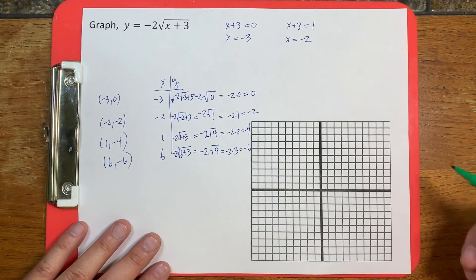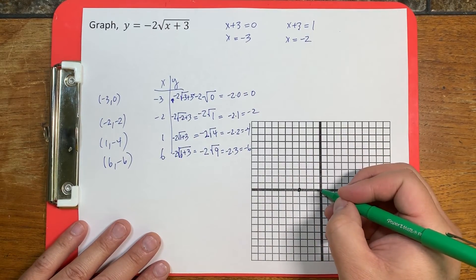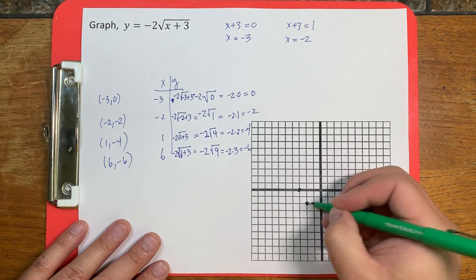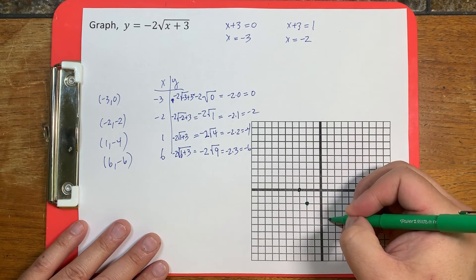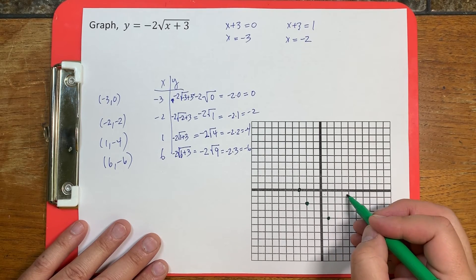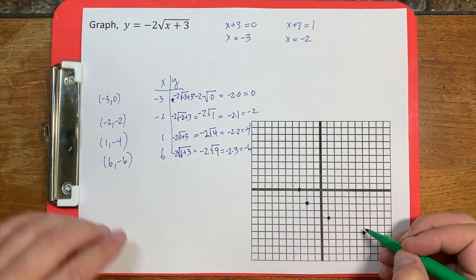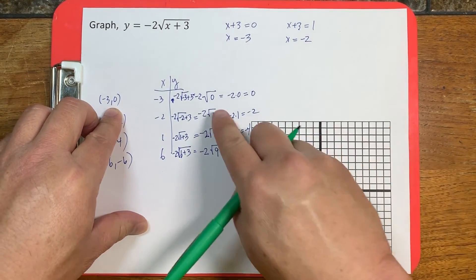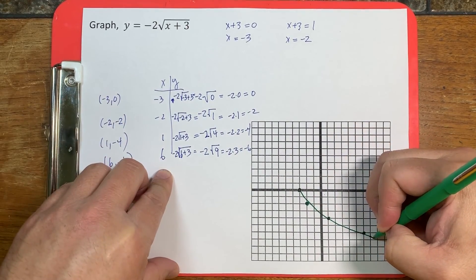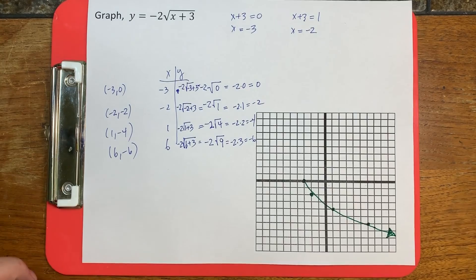Now let's graph this. We're starting with negative 3 comma 0, then negative 2 comma negative 2, then 1 comma negative 4, and then 6 comma negative 6. Remember, we can't get smaller because then we'd get a negative square root, but we can always get bigger. So we have an arrow on this side, and no arrow on the other side. Thanks for watching this video.